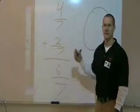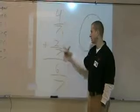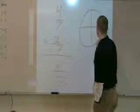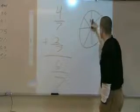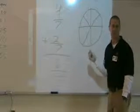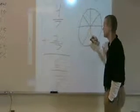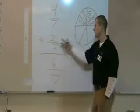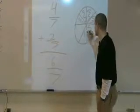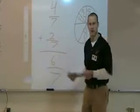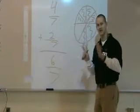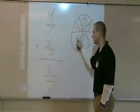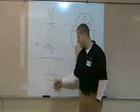Think about it this way: a pizza has seven slices and four are remaining. Another pizza has seven slices and two are remaining. I could just take those two slices from that pizza tray and slide them onto the other pizza tray that has four slices, because both trays hold seven slices total. Now I have six slices on a tray that holds seven — one empty spot. So I have seven slices total, six remain: six-sevenths.